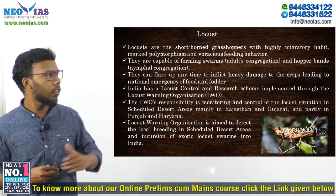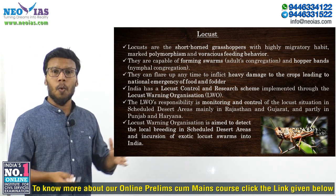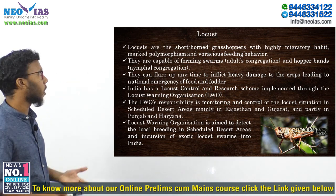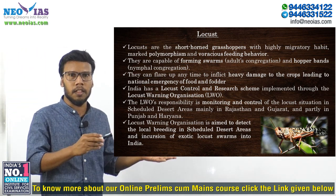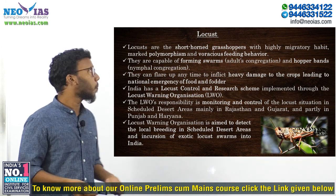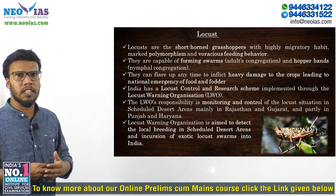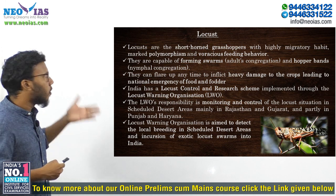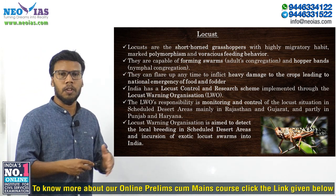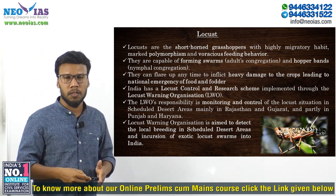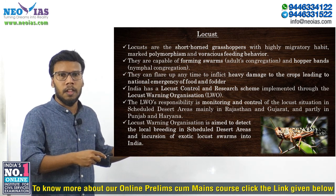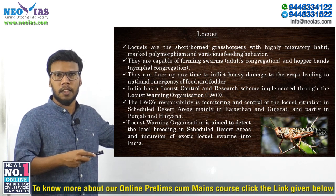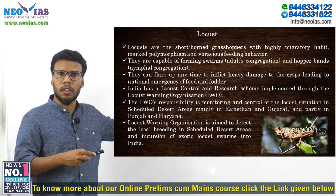Today we are going to discuss about locusts. Right now, parts of Rajasthan, Gujarat, Madhya Pradesh, Chhattisgarh, Maharashtra, and Uttar Pradesh are under locust attack. According to alerts issued by the Food and Agriculture Organization of the United Nations, India will witness a more severe locust attack by the end of June and in July. That's why it was recently in the news.